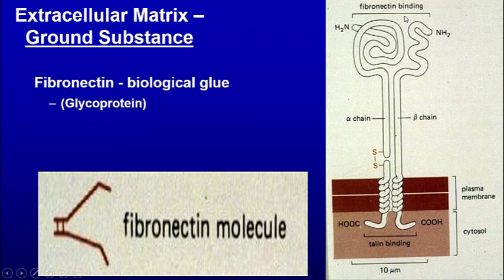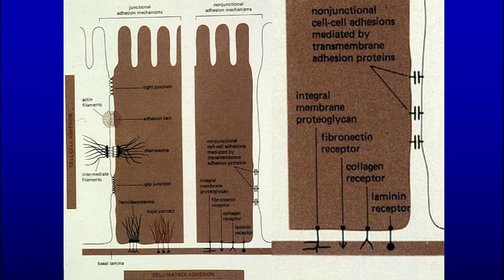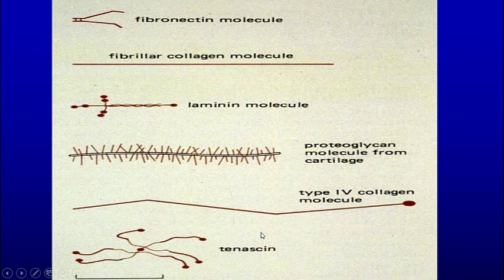In terms of fibronectin: if this is a cell, this is the cytoplasm of the cell membrane — it has a fibronectin binding site or fibronectin receptor. So the fibronectin molecule binds to that and binds the cell to the extracellular matrix. It also has junctions between adjacent cells. Here are fibronectin receptors, collagen receptors, and laminin receptors — proteins in the cell membrane that interact with the extracellular matrix.